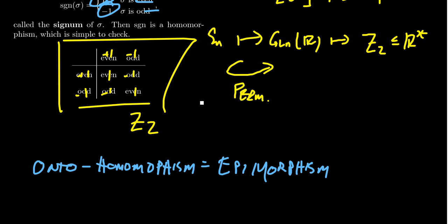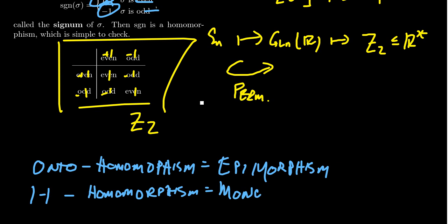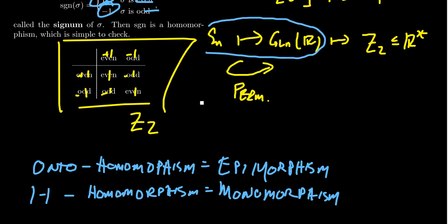You're probably wondering whether there's a special name for one-to-one homomorphisms — and the answer is yes. A one-to-one homomorphism is called a monomorphism, with 'mono' meaning one. For example, we're embedding S_n inside the general linear group GLn(R) as a monomorphism. As a consequence of the first isomorphism theorem, the image of a monomorphism is isomorphic to the domain.